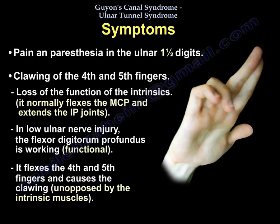The intrinsics normally flex the MCP and extend the IP joints. In low ulnar nerve injury, the flexor digitorum profundus is working and functional — it flexes the fourth and fifth fingers and causes clawing. This is unopposed by the intrinsics because the intrinsics are not working.